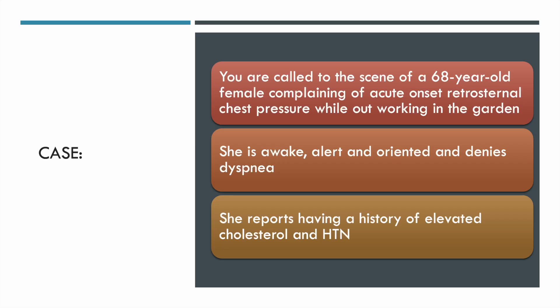Here's the case. You're called to the scene of a 68-year-old female complaining of acute onset retrosternal chest pressure while out working in the garden. She developed a sudden onset chest pressure while working, stopped, and the pain continued — prompting a 911 call. On initial contact, she's awake, alert, oriented, and denies dyspnea. History is significant for elevated cholesterol and hypertension. Taking this history and presentation into consideration, we immediately move on to getting a 12-lead ECG.